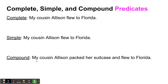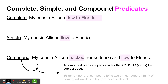Pause and see if you can come up with the complete, simple, and compound predicates for the example. The complete predicate is 'flew to Florida' because that is the complete action. The simple predicate is also 'flew to Florida' — the fewest words describing the action. For compound, in 'My cousin Allison packed her suitcase and flew to Florida,' the compound predicate is 'packed' and 'flew' — just the actions, not where she flew or what she packed.